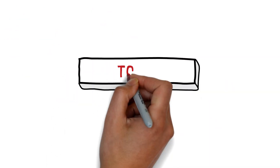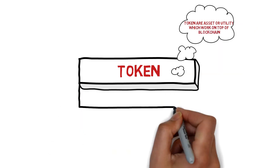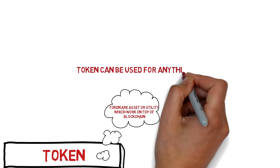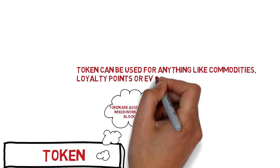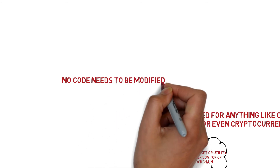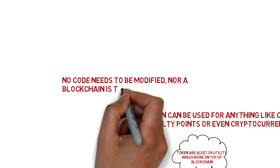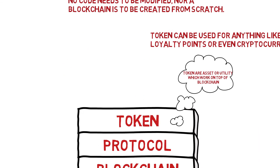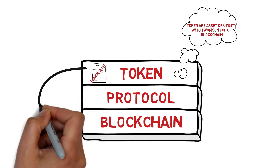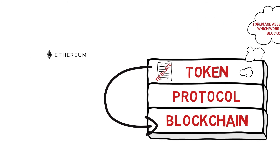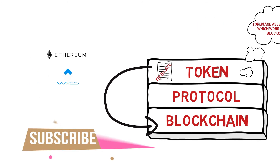Now let's look at tokens. Tokens are basically representations of an asset or utility, which works on a blockchain. Tokens can basically be used for anything like commodities, loyalty points, or even cryptocurrencies. Tokens can be created very easily because you don't need to modify any code nor create a blockchain from scratch. To create tokens, you have to follow a standardized template based on the blockchain — the most popular are the Ethereum and Waves platforms, which allow you to create your own tokens.